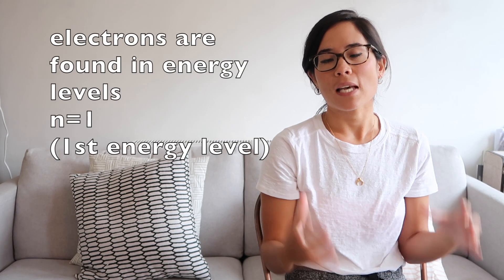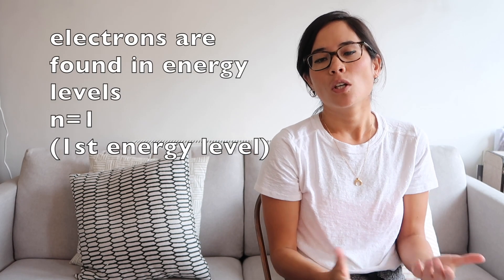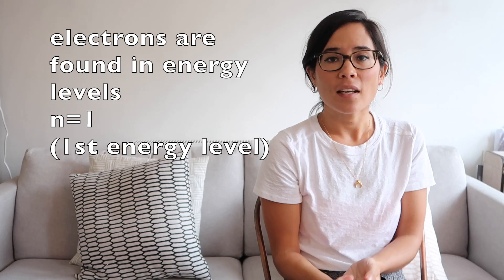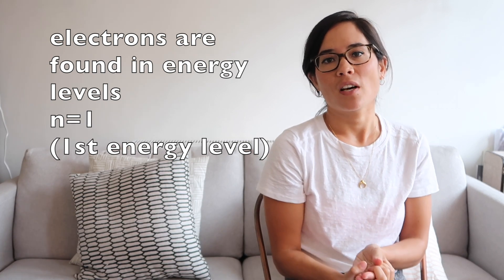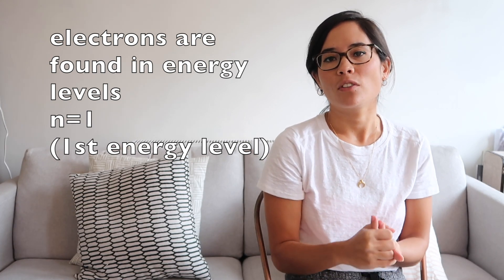Last video I discussed line emission spectra and we talked a little bit about Bohr's theory on the structure of the atom, and that's where we're going to begin this video. He came up with the notion that electrons exist in discrete energy levels, which we now give the letter N. So N equals 1 means the first energy level, the energy level closest to the nucleus.